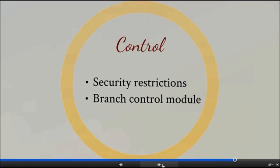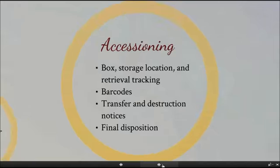We also have the branch control module that works really well. If you have different departments that are somewhat autonomous, each with a records coordinator who has their own responsibilities, you can branch things off so they have control within their own area but not in the others. We do accessioning and everything that follows from that — box, storage location, and retrieval tracking. You can print out barcodes for your folders and your boxes, it's very easy to create transfer and destruction notices, and final disposition is handled quite easily as a simple flagging saying this was destroyed or sent to archives.